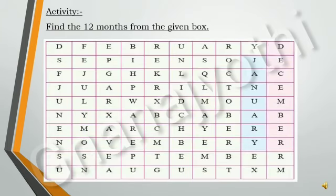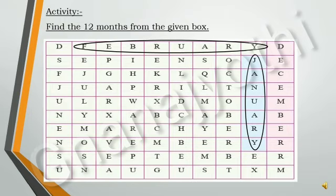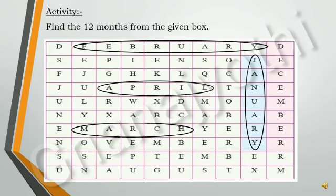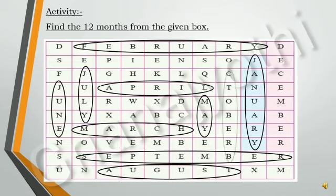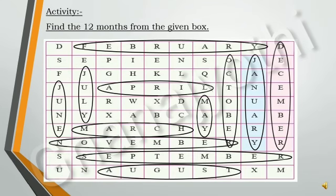Now, let us do one small activity. Find the 12 months from the given box: January, February, March, April, May, June, July, August, September, October, November, and December. We have now found all 12 months from the given box.